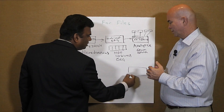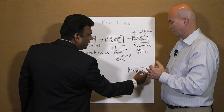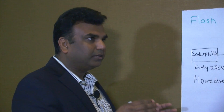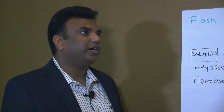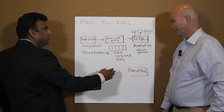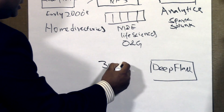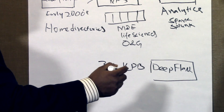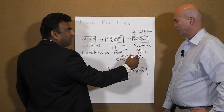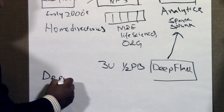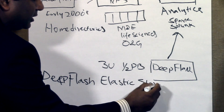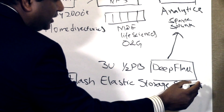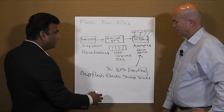IBM recently introduced something called Deep Flash — a new class of Flash that sits in between high-performance disk drives and conventional Flash with respect to price and performance. It's lower cost than the conventional all-flash array but much higher performance than 15K drives. We're able to take advantage of this Deep Flash, which is very dense — in a 3U enclosure you can get up to half a petabyte of capacity. We use that with a parallel file system as an integrated solution called Deep Flash Elastic Storage Server, using Flash as the back-end to increase application response times.